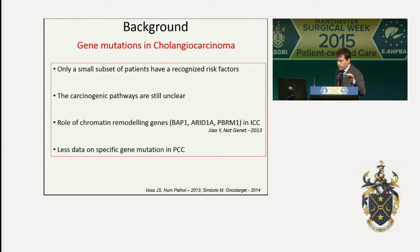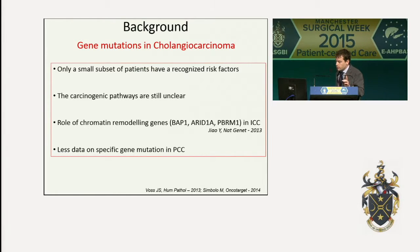Especially in Western countries, only a small subset of patients have clear and recognized risk factors. Moreover, the carcinogenic pathways leading to cholangiocarcinoma are still unclear. A recent whole exome sequencing study, a result of a collaboration between Johns Hopkins University and the University of Verona, revealed a key role for chromatin remodeling genes in the development of intrahepatic cholangiocarcinoma. However, less data are available on specific gene mutations in perihilar cholangiocarcinoma.